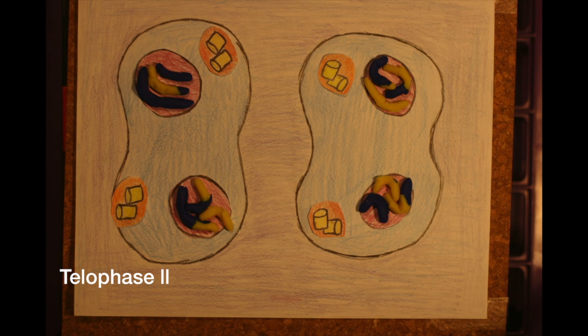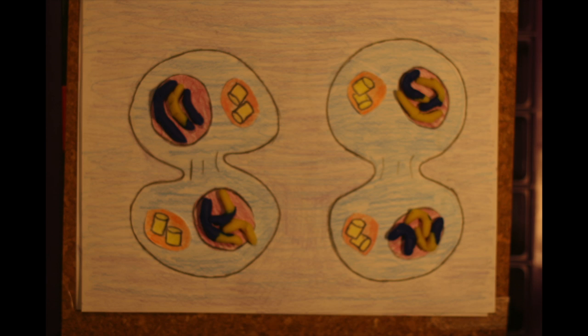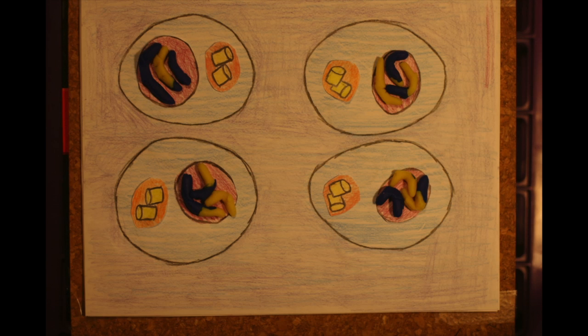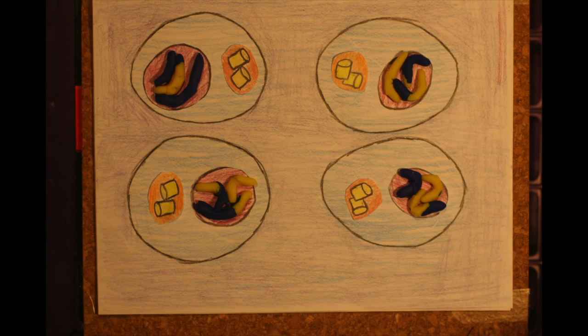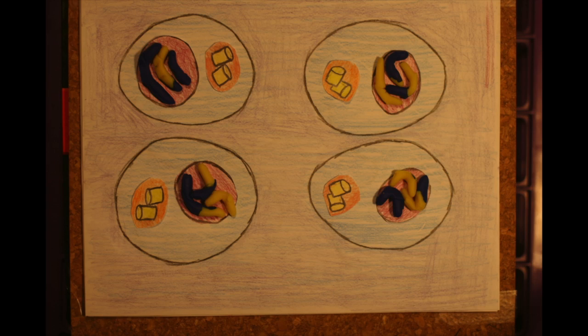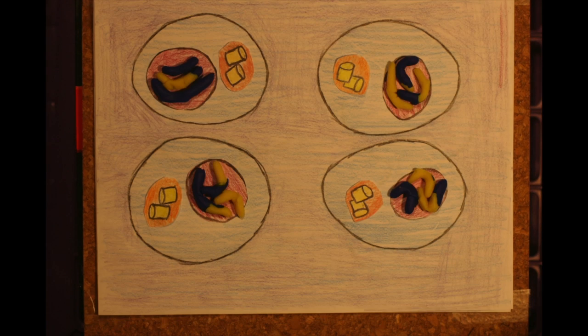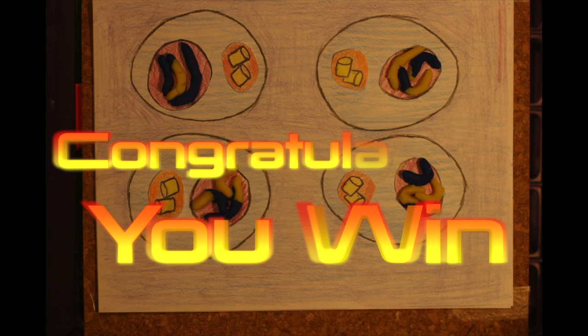Microfilaments assist the cell membrane in pinching off during cytokinesis. Now we finally have four genetically different daughter cells. And that, students, and Mrs. Ziggle, is the process of meiosis.